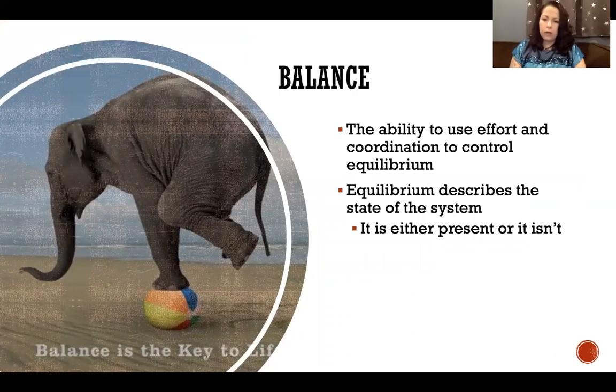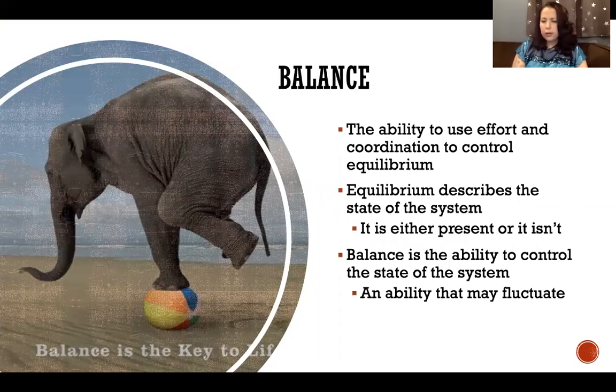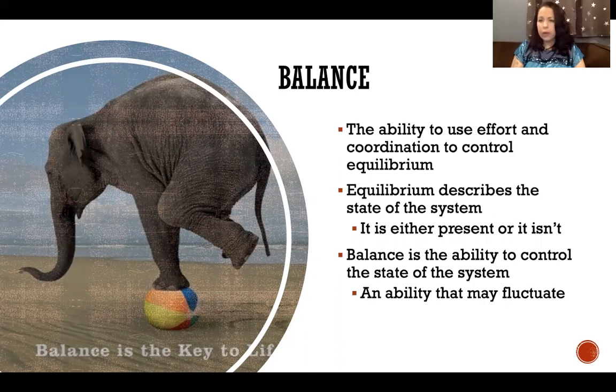Equilibrium is the state of the system, and balance is the ability to control it. Balance is an ability that can decay over time or improve over time, an ability we can work on or that can fall away.